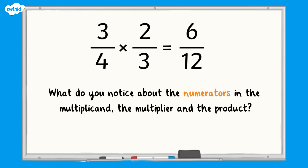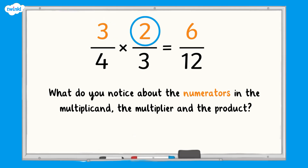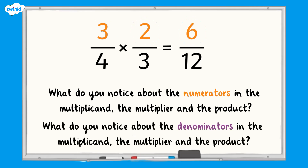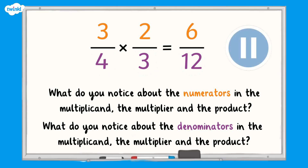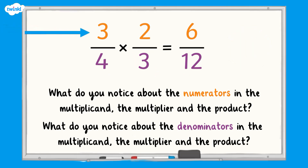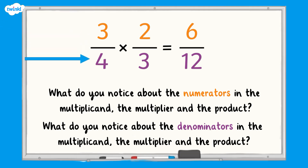What do you notice about the numerators in the multiplicand, the multiplier, and the product? Looking at the numerators, three multiplied by two equals six. Looking at the denominators, four multiplied by three equals twelve.